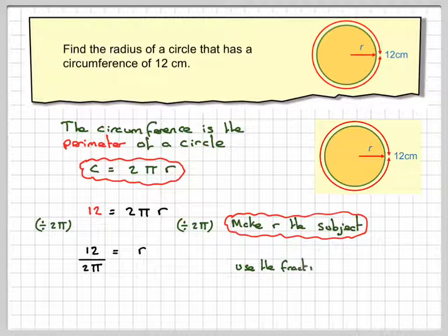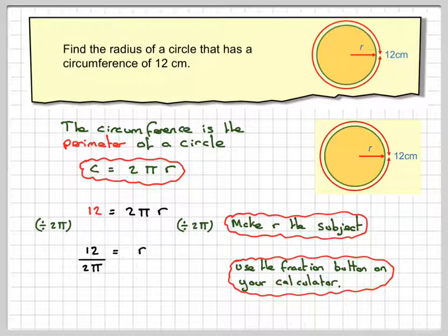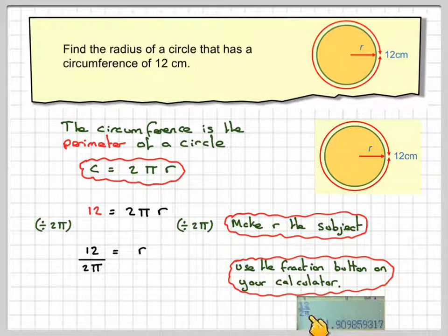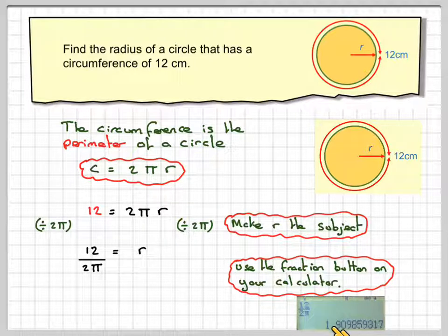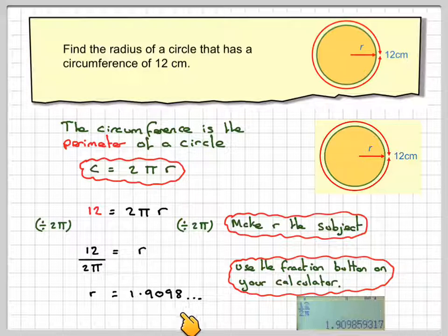Since we're using a calculator, use the fraction button. It's very useful. So you'll get a fraction, 12 divided by 2π, and that gives the answer r equals 1.9098...